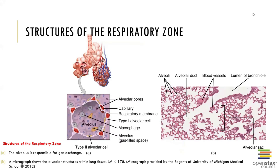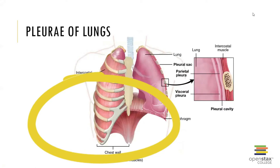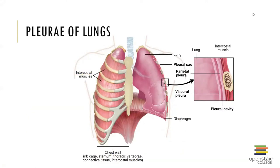Looking at the respiratory zone on a microscopic level, you can see the structures existing there. The chest wall comprises the rib cage, the sternum, the thoracic vertebrae, connective tissue, and the intercostal muscles, whose directionality we learned about previously.